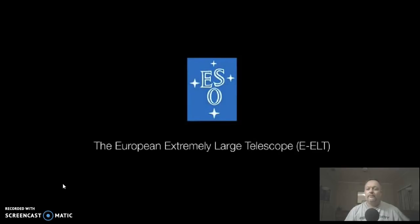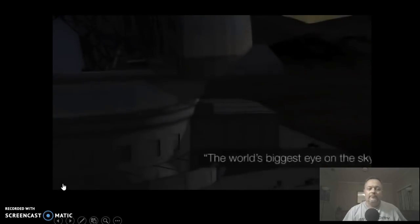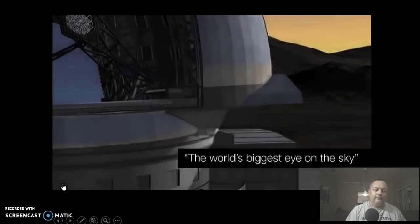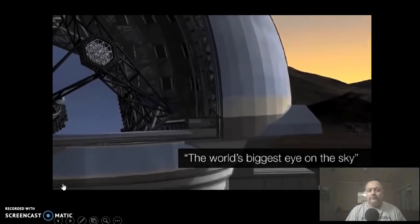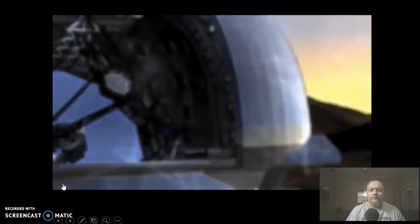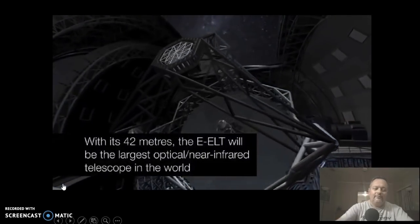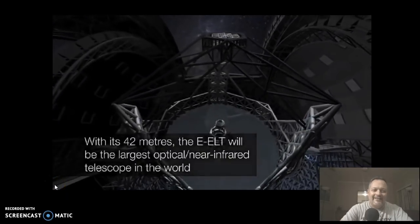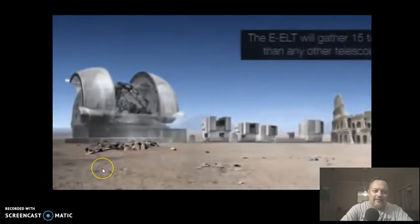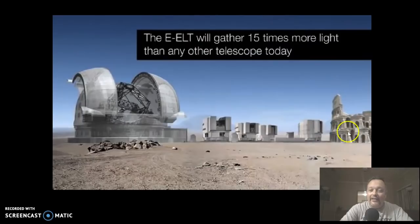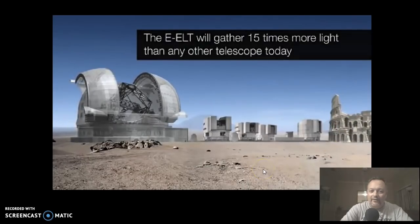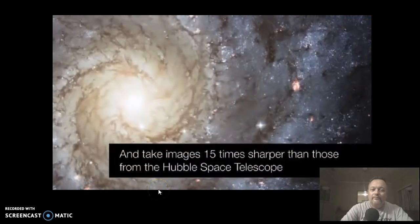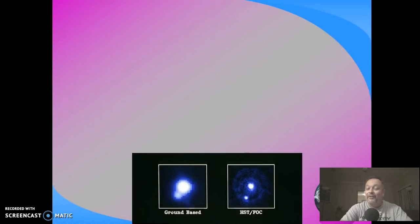Here they are, the Giant Magellan being built now, the European extremely large, and the 30-meter side-by-side. 42 meters. It's ridiculous. That's it compared to the VLT and the Roman Colosseum for scale. Unbelievable. So that's a look at the next generation of telescopes.